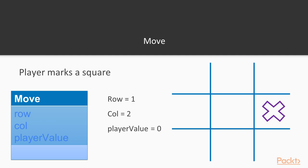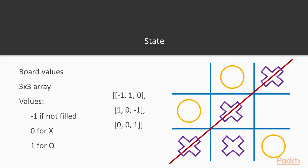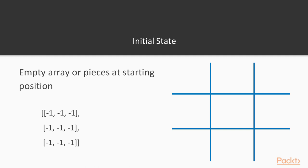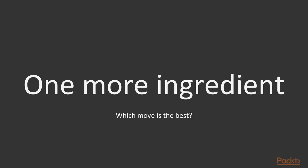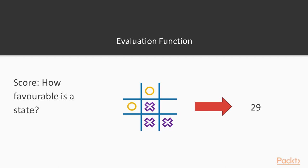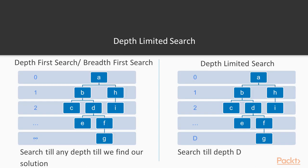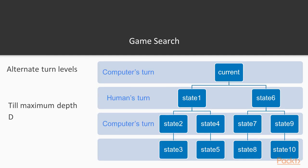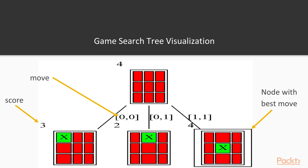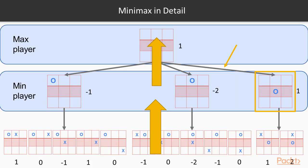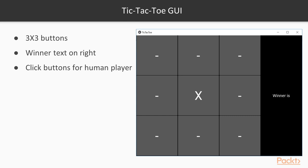We will learn how to represent a game move. Similar to the constraint satisfaction problem, we will see how to formulate the search problem for games by defining state, initial state, successor function, and goal function. In game search, we have one more ingredient which answers the question of which move is the best — the evaluation function. We will learn how to compute that for tic-tac-toe. We move one step forward by learning about depth-limited search and how it is used in game search. Then we learn how to visualize search trees for game search. With our foundation set, we will learn about minimax search and how that works for tic-tac-toe to find the best move. After this, we develop the GUI for the game and integrate the algorithm into it.